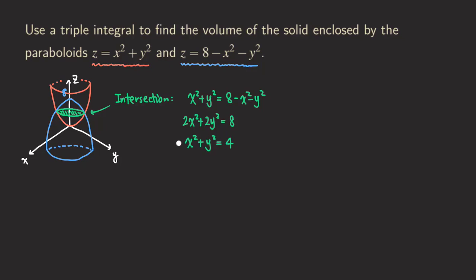That's a circle equation. Comparing with the first paraboloid equation, you can see that the z value is equal to 4. So the intersection circle has radius 2 and is located at z equals 4.